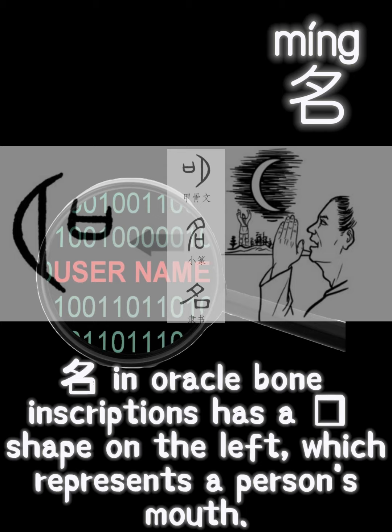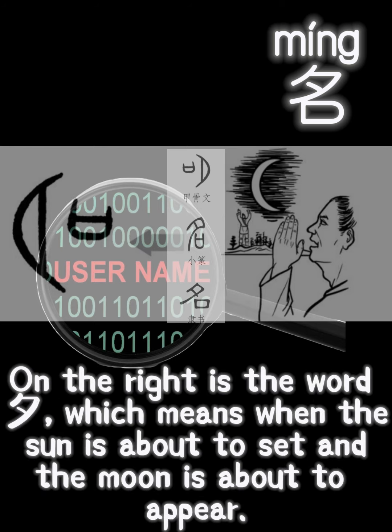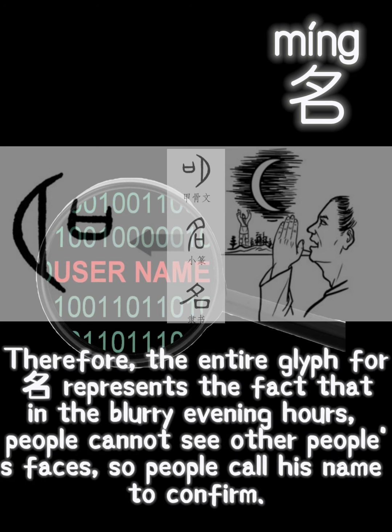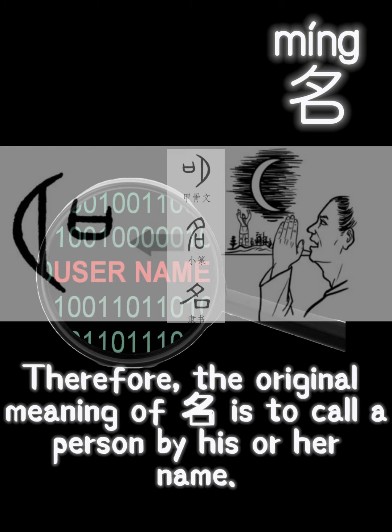名 in oracle bone inscriptions has a 口 shape on the left, which represents a person's mouth. On the right is the character 夕, which means when the sun is about to set and the moon is about to appear. In the evening dusk, we cannot see clearly the specific appearance of a person. Therefore, the entire glyph for 名 represents the fact that in the blurry evening hours, people cannot see other people's faces, so people call his name to confirm. Therefore, the original meaning of 名 is to call a person by his or her name.